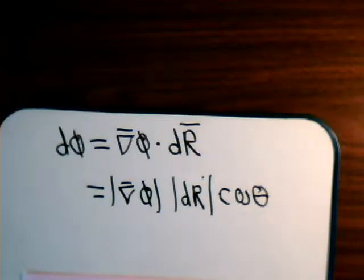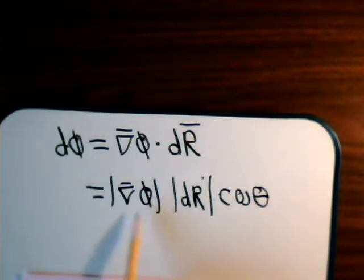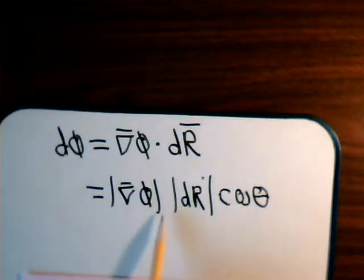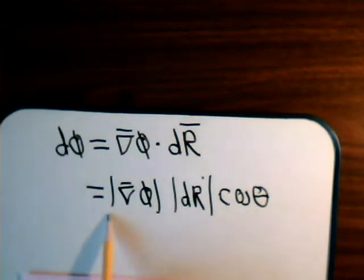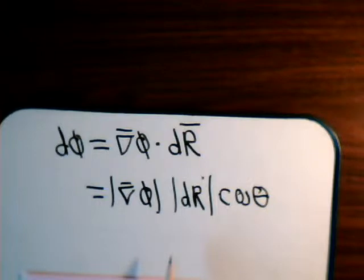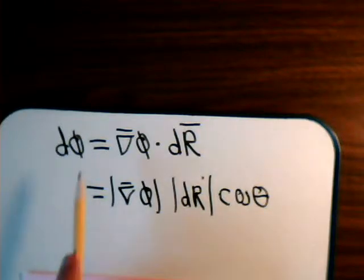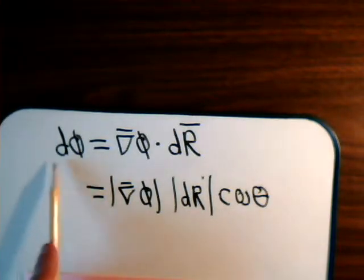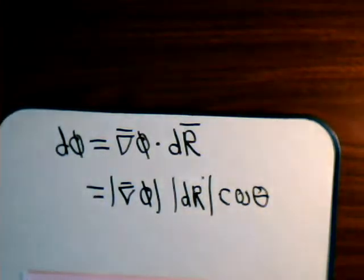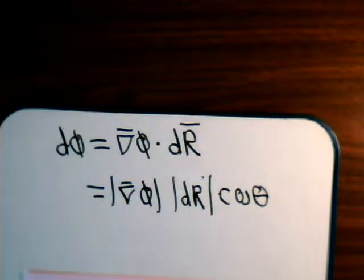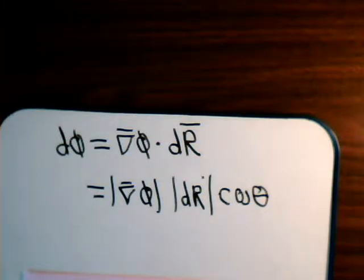So what it means is that the gradient vector's magnitude and direction tells us the greatest rate of spatial change for our scalar. Again, that was discussed in the introductory video on the del operator and the gradient.